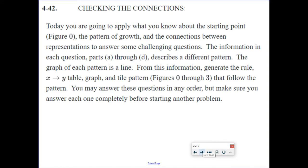So problem 442. Problem 442 is a problem we're going to be doing today during the video and all day tomorrow, and it is going to take us the whole time to just do this one problem. Today, you are going to apply what you know about the starting point, which is figure zero, the pattern of growth, and the connections between representations to answer some challenging questions. The information in each question, parts A through D, describes a different pattern. The graph of each pattern is a line, so they're all linear. From this information, generate four things: a rule, a table, a graph, and a tile pattern, figures zero through three, that follow the pattern. You may answer these questions in any order, but make sure you answer each one completely before starting another problem.